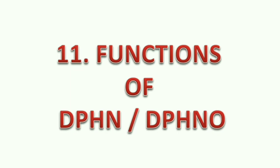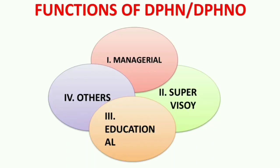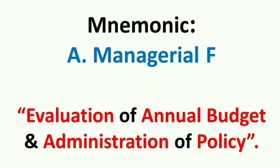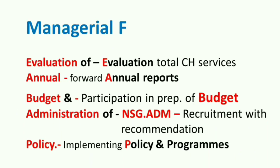Functions of district public health nurse or district public health nurse officer — her functions are broadly classified into four areas: managerial functions, supervisory functions, educational functions, and others. Managerial functions mnemonic is 'EVALUATION OF ANNUAL BUDGET AND ADMINISTRATION OF POLICY.' EVALUATION for evaluation of total community health services in the district; ANNUAL for forwarding annual reports to the state; BUDGET for participation in preparing the budget for the district; ADMINISTRATION for nursing administration — that is, recruitment with recommendations for various categories of health workers; POLICY for implementing policy and programs in the district.